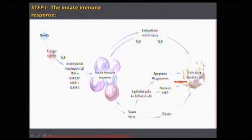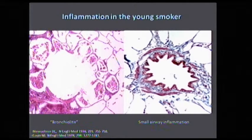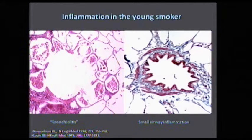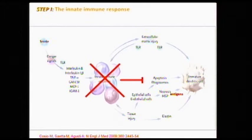This will trigger a very important reaction. We have shown that young smokers do have abnormalities in the lung. This is what was described as respiratory bronchiolitis — you can see the terminal bronchiole with an enormous amount of macrophages that happens in smokers but not in non-smokers, and a small airway already in a young person with an important inflammatory infiltrate around the airway.